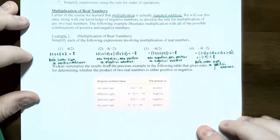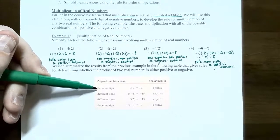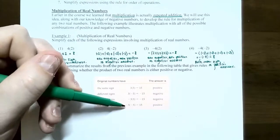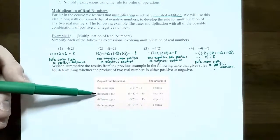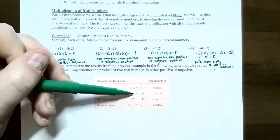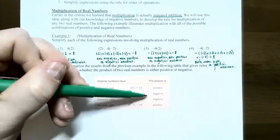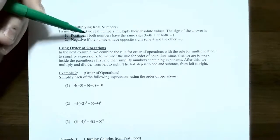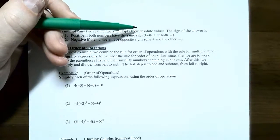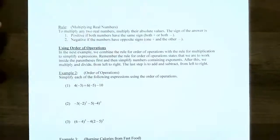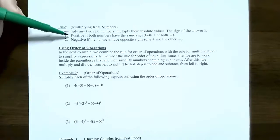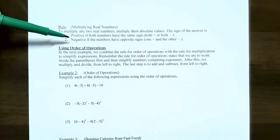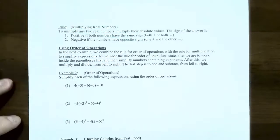Let's summarize what we found. If the two numbers you're multiplying are the same sign — like positive 3 times positive 5 — the answer is positive 15. If both are negative, like negative 3 times negative 5, the answer is still positive. But if you have different signs — positive 3 times negative 5, or negative 3 times positive 5 — the answer is negative in both cases. The rule: multiply their absolute values, then determine the sign. Same sign gives a positive product; opposite signs give a negative product.